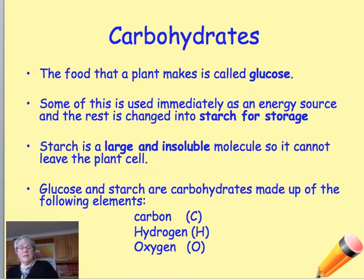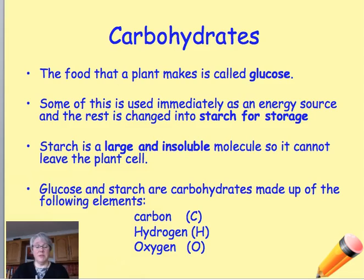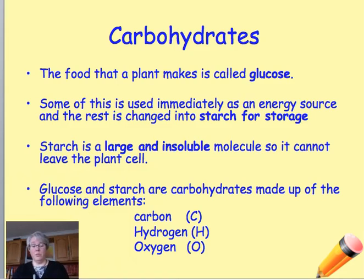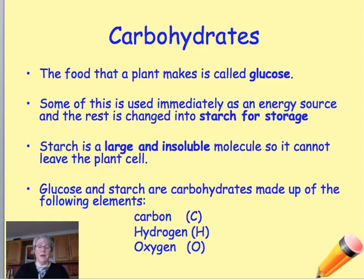A wee bit of a recap on carbohydrates — that's what glucose is, and so is starch. The glucose that is made is sometimes used immediately by the plant in the process of respiration, which is the next topic. But the plant may not need to use that glucose at the time, so it wants to store it. Glucose is a very small and soluble molecule — it will dissolve in water and could diffuse out of the plant. So what it does is change it into starch, which is a very large and insoluble molecule. It can store it there until it's ready to use it, then break it down into glucose for energy. Glucose and starch are both carbohydrates, made of the elements carbon, hydrogen, and oxygen.